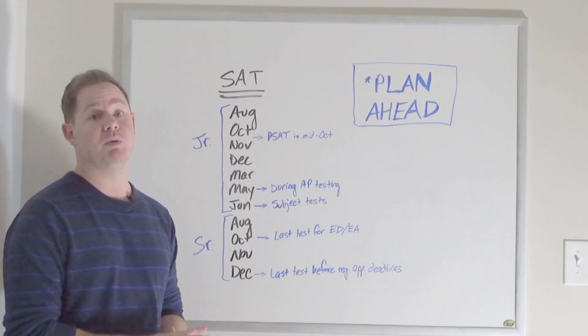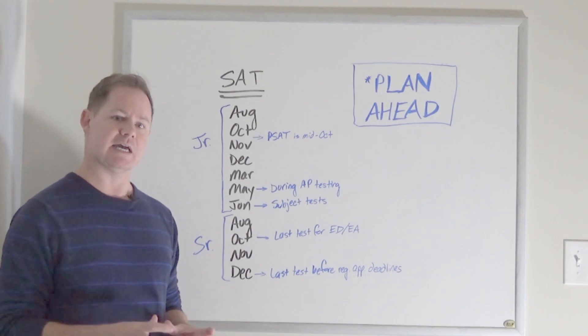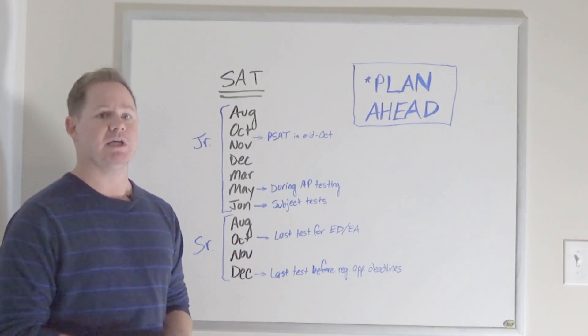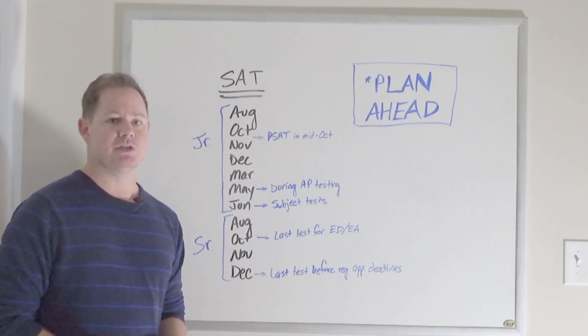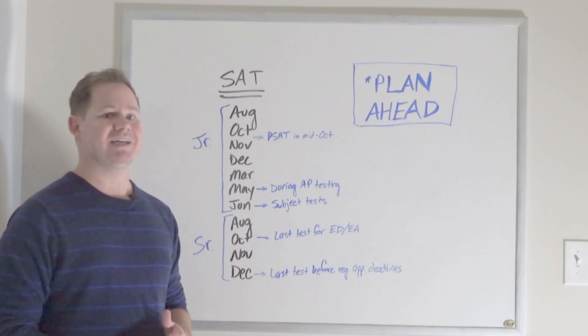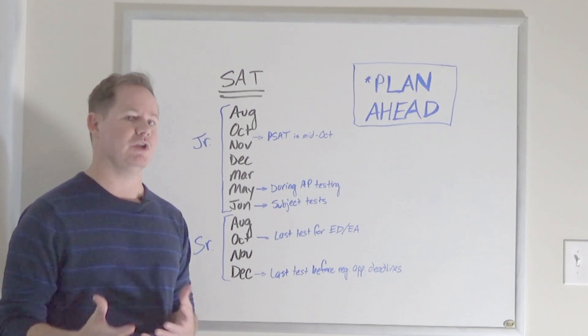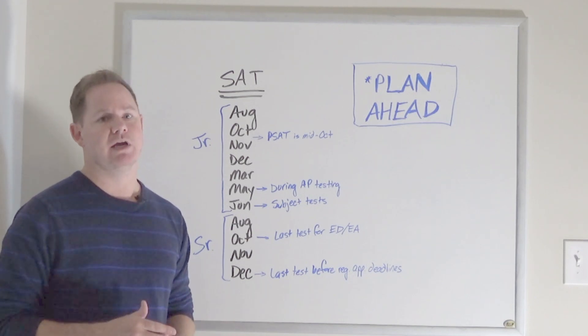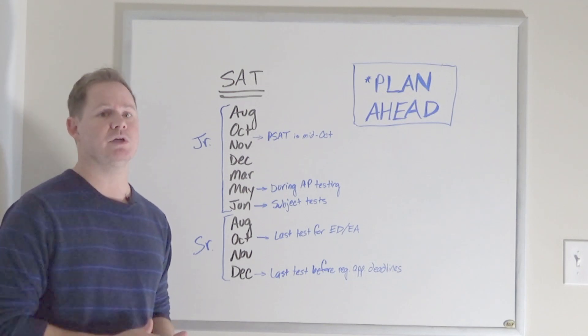But the May test is something that I want to point out and just make sure that juniors are aware of. When you're planning your testing timeline nice and early, you want to make sure you look at your classroom schedule. Because if you're taking any AP exams or if you're in an IB program, your AP and IB testing right at the end of the year does conflict with that May test and oftentimes makes it very hard to juggle a May SAT around those other exams that you have for your coursework.